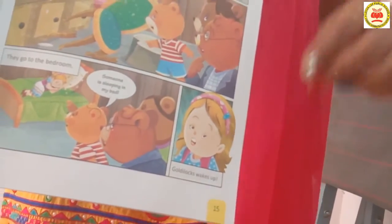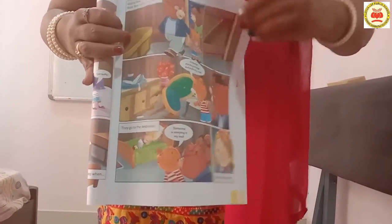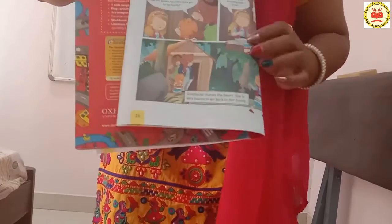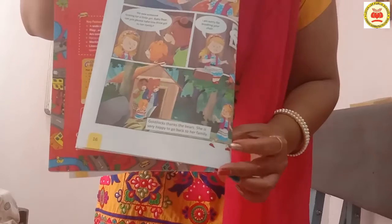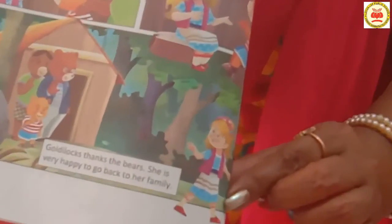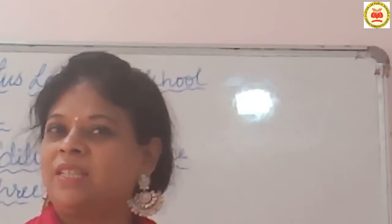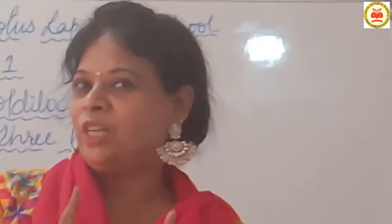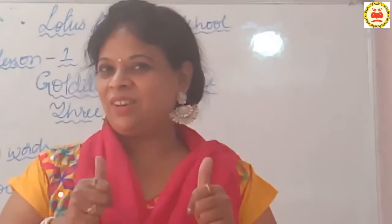And finally, Goldilocks. You can see Goldilocks here. And finally she thanked them. She was very happy to go back. You can see here how she thanked them and went back to her family. Can you see how Goldilocks is going back to her family? So please, all of you, read the textbook. All of you, once again, read the lesson. You enjoyed the lesson and you liked the story? Bye, children. Have a nice day.